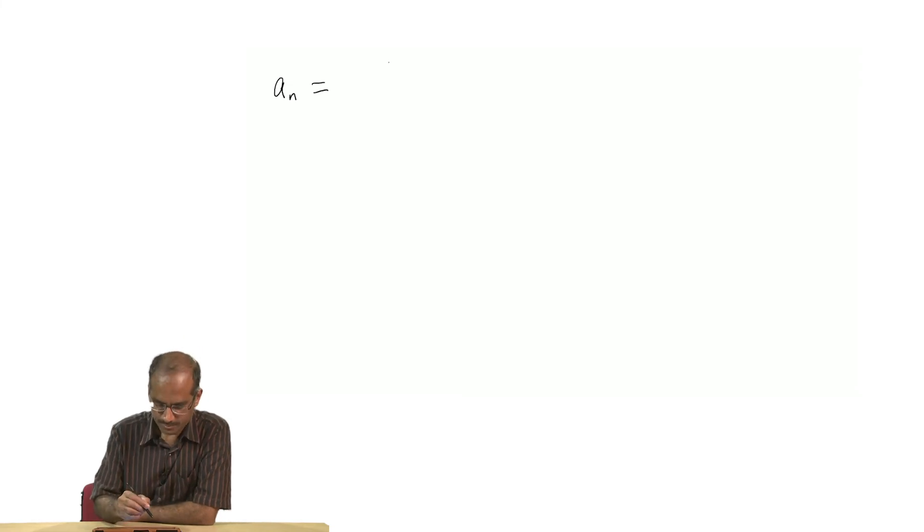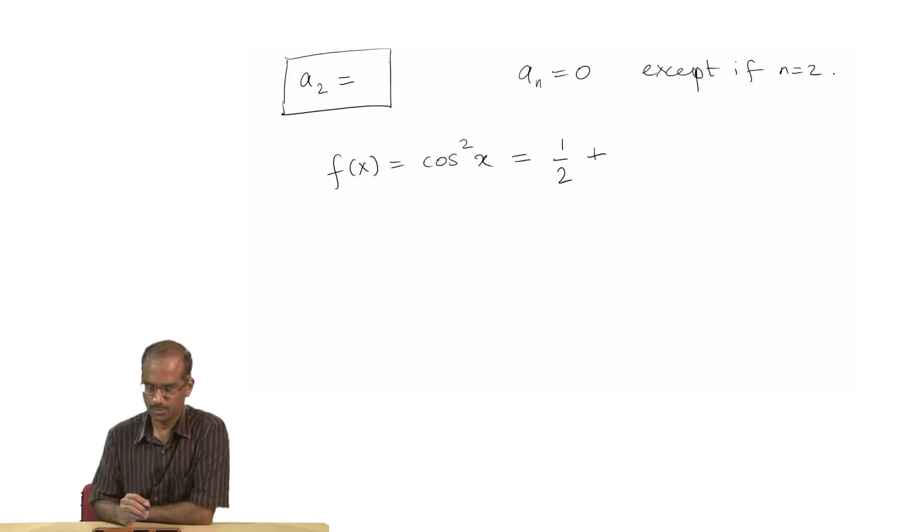And sin nx, irrespective of what the value of n is, n being an integer will be 0 both for x equal to π and x equal to 0. The first integral is entirely 0. Clearly we are headed towards a situation where all the a_n's are 0 except 1 for which n is equal to 2.